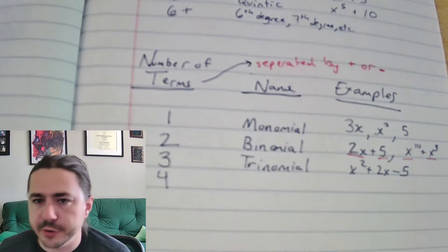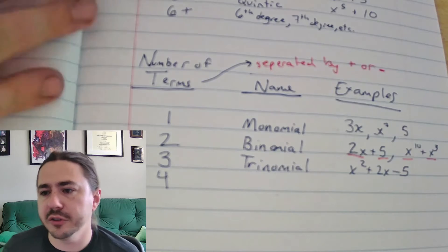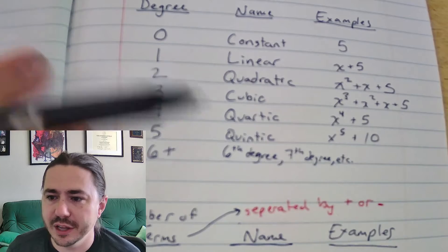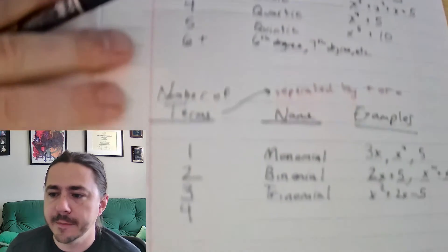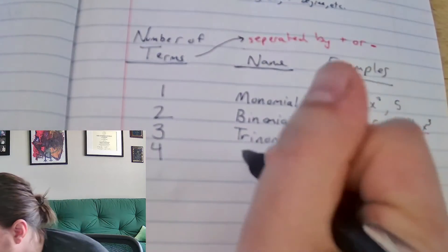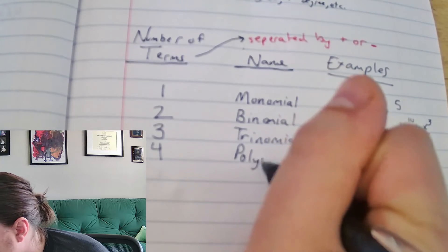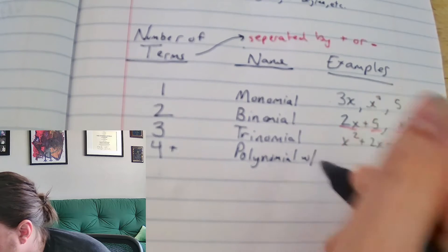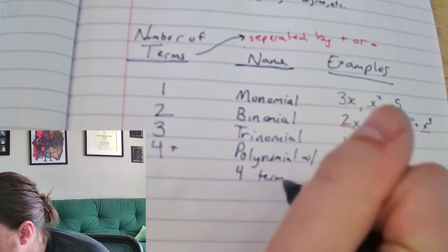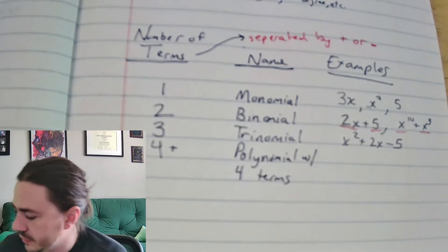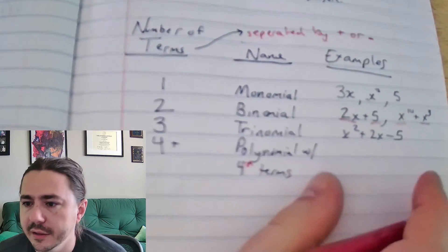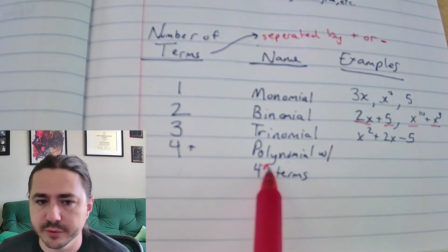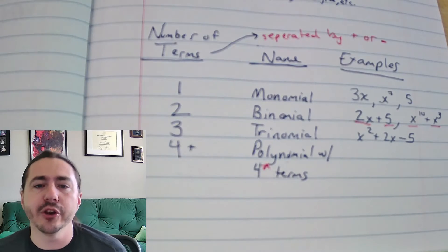If you have more than three terms, it doesn't really have a special name — just like how we ran out of names when the degree was higher than 5. If you have more than three terms, you just give it the generic name: we call it a polynomial. That's 4 or more terms. If there are more than four, you would say a polynomial with however many terms — like a polynomial with 10 terms.